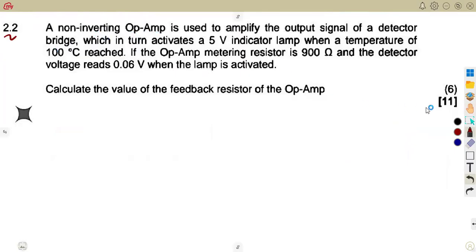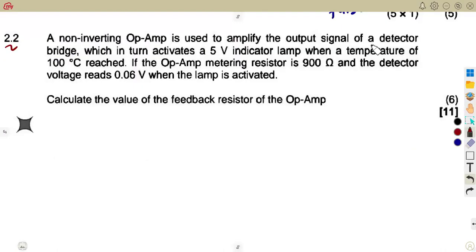Then they are saying, on 2.2, a non-inverting op-amp is used to amplify the output signal from a detector bridge, which in turn activates a 5-volt indicator lamp when the temperature of 100 degrees is reached. If the op-amp metering resistance is this, and the detector voltage reads when the lamp is activated, meaning they gave us VD. Calculate the feedback of the op-amp. So there, it was a direct question. Remember what I said when you are dealing with this part of an op-amp and the transducer, which is your detector. In this case, the part of our detector bridge, its detector voltage, the detector voltage from your transducer, which is 0.06, becomes the input to the op-amp.